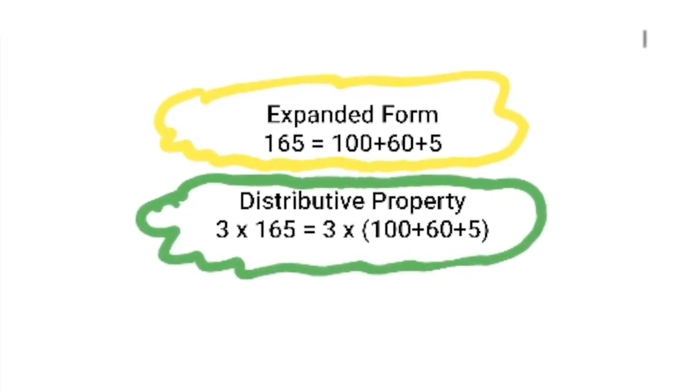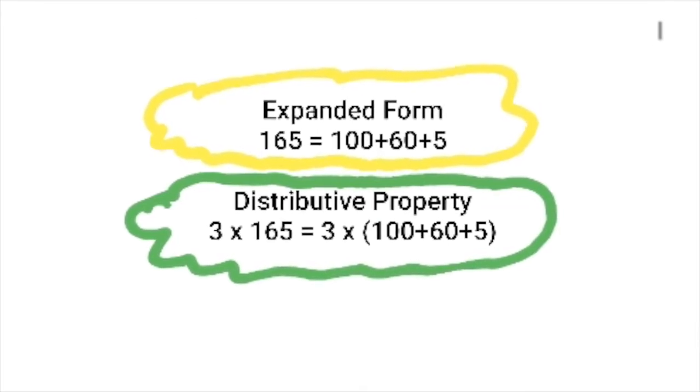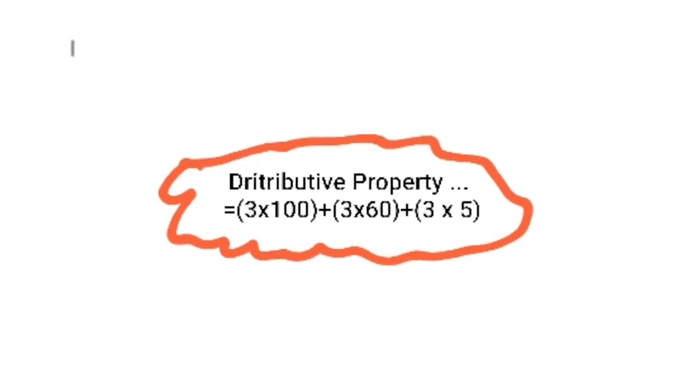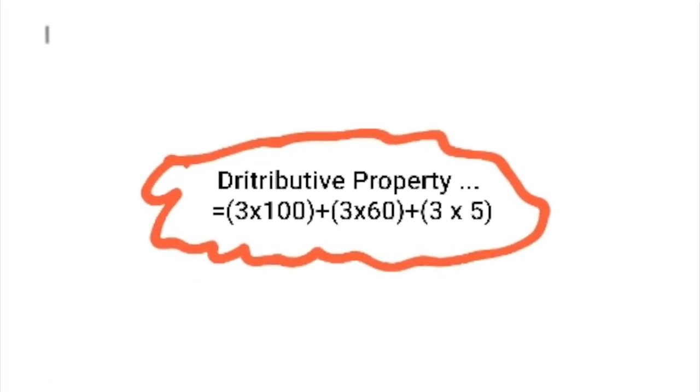Then we use the distributive property, which tells us to do 3 times 100, 3 times 60, and 3 times 5.